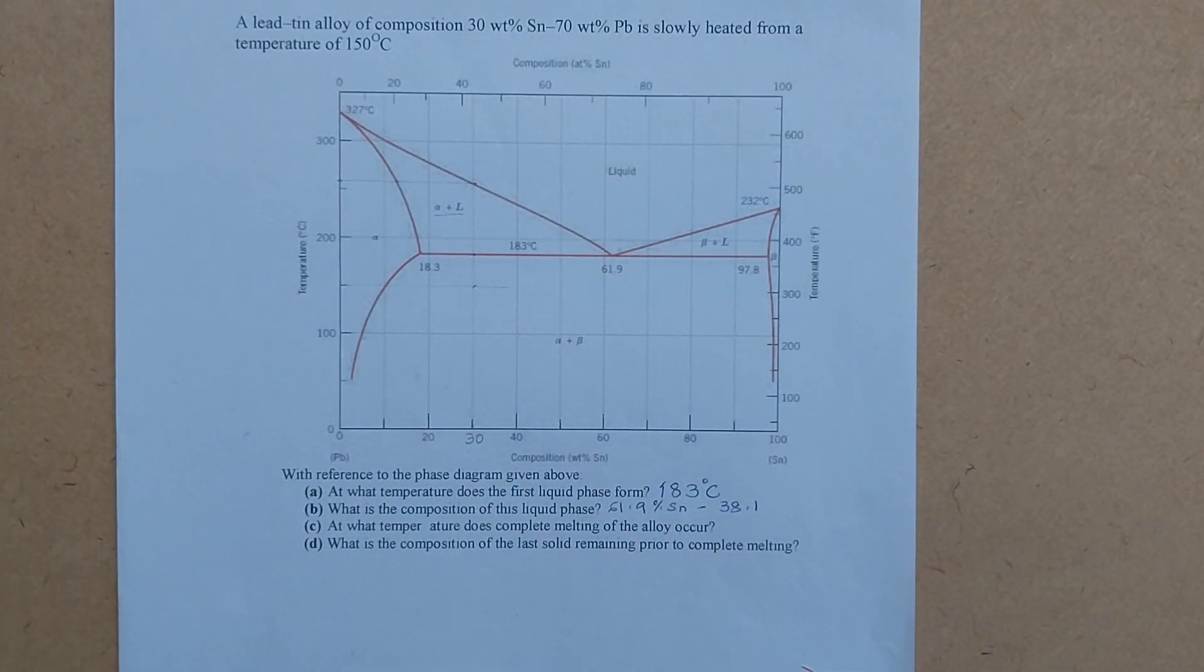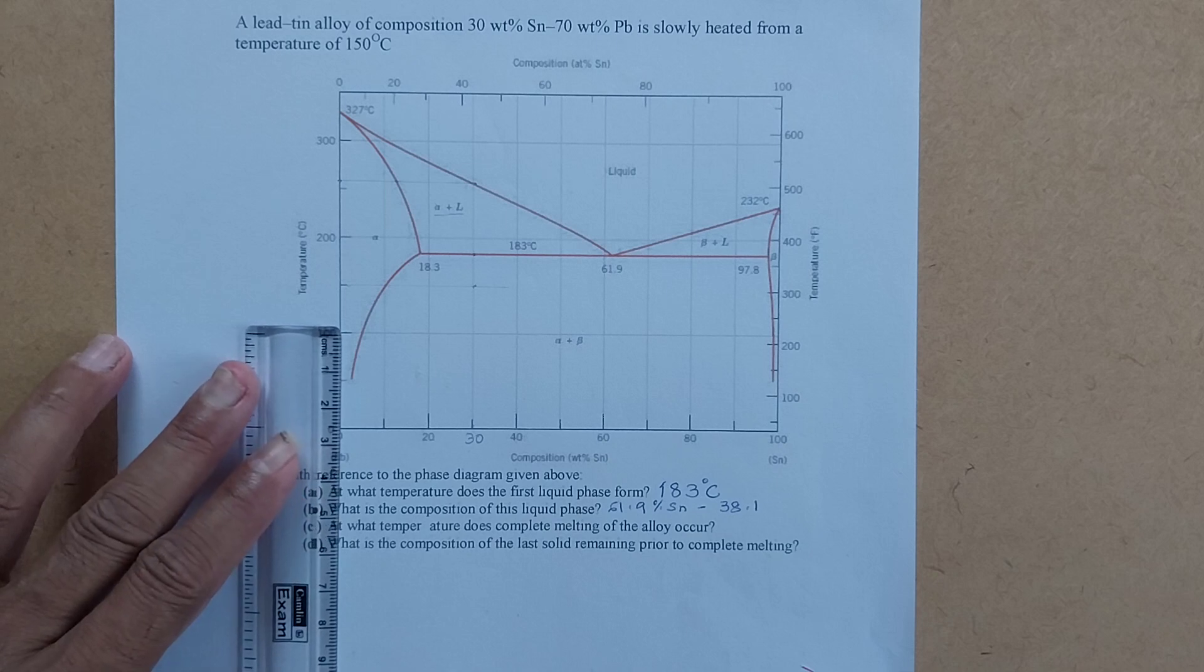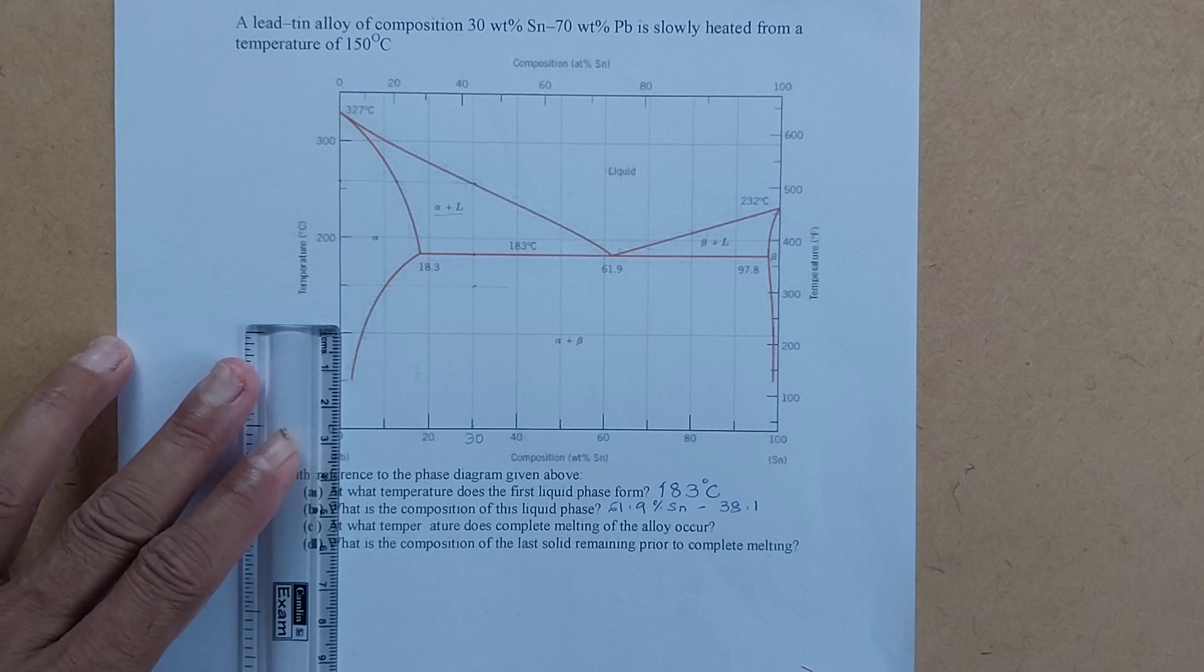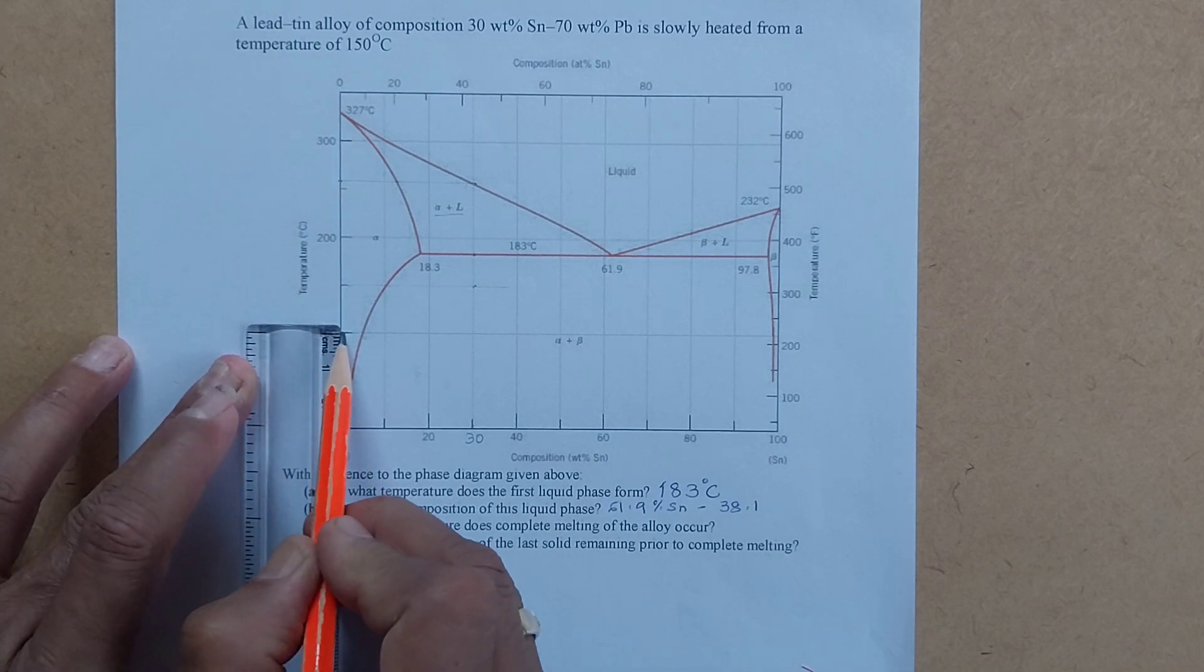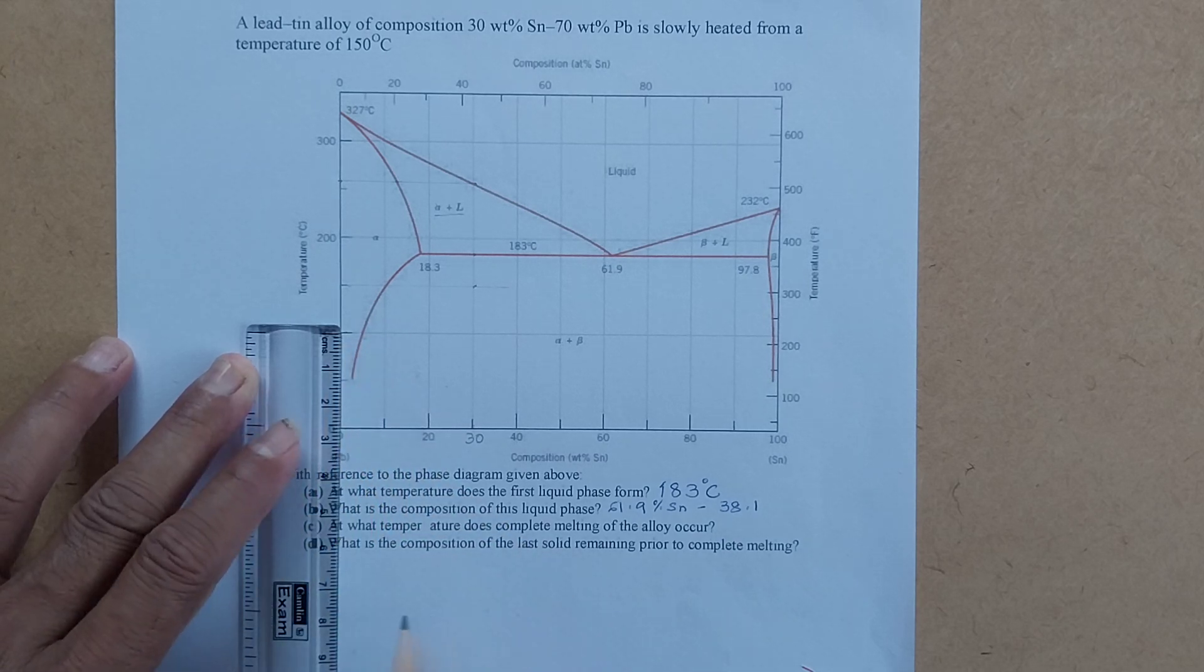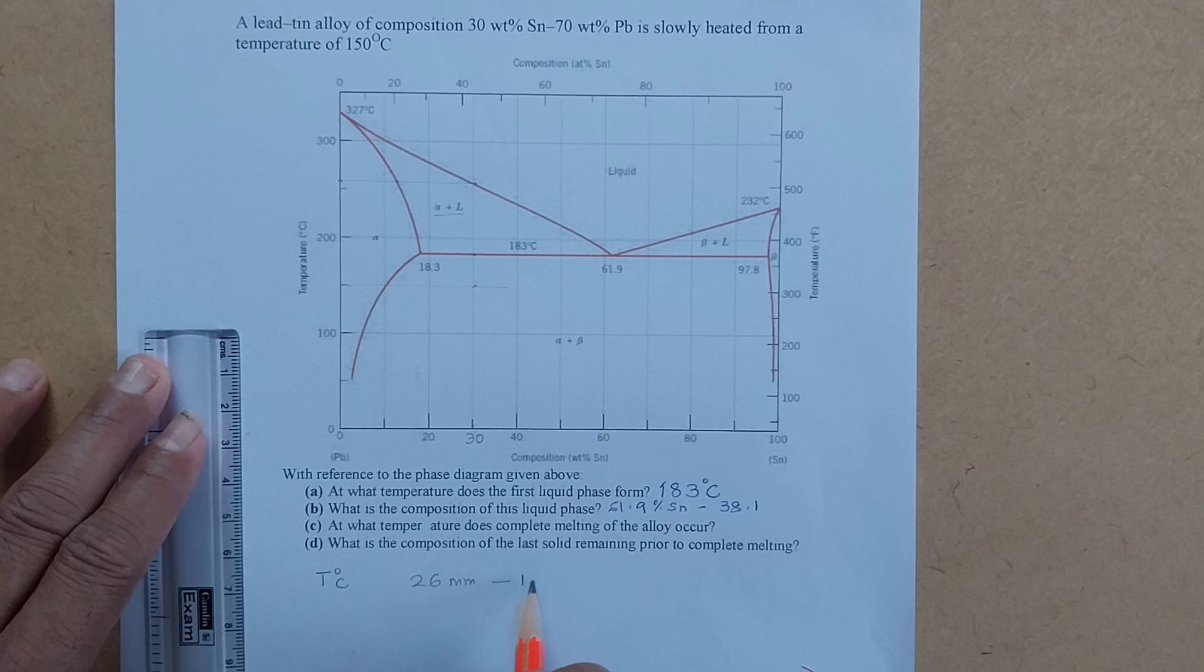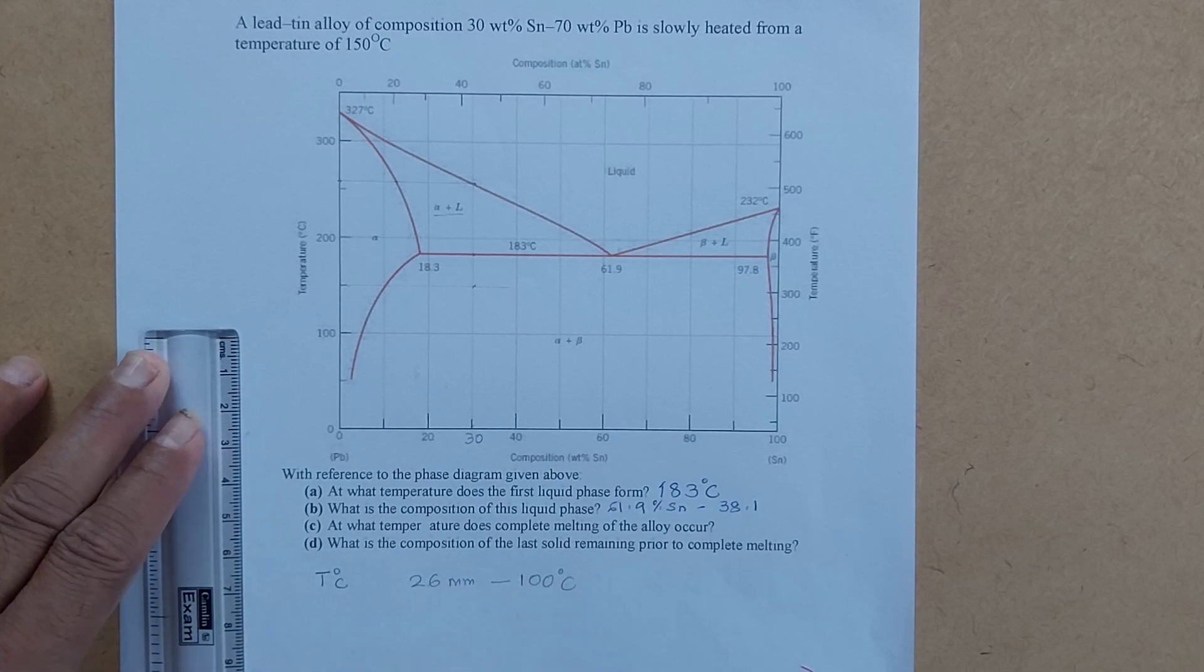Now how do we obtain the temperature at this point? To do that, we need to understand the scale of the graph. So the scale of the graph here, as you can see, can be obtained by measuring the distance of 100 degrees Celsius. So we have here the distance of the 100 degree Celsius point from zero at a distance of, we talk about temperature, this is 26 mm for every 100 degrees Celsius.